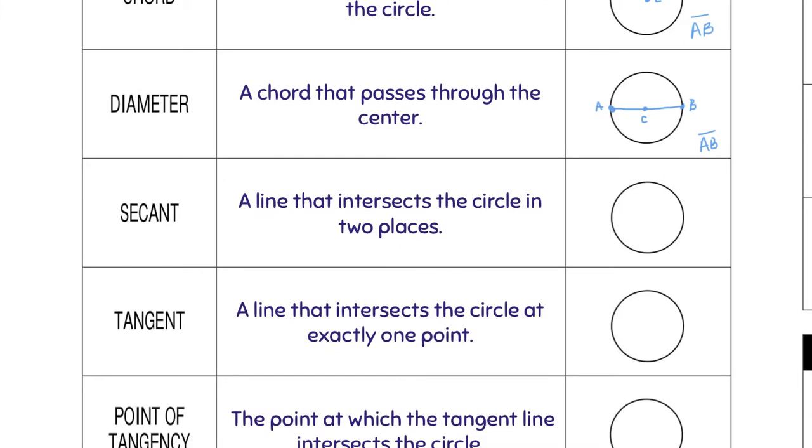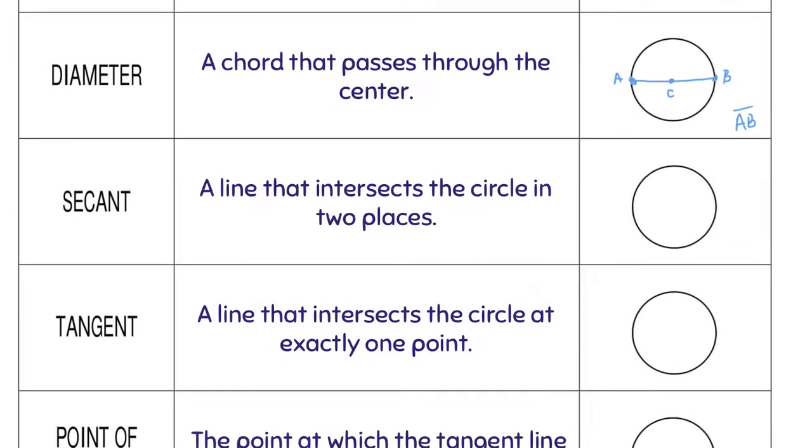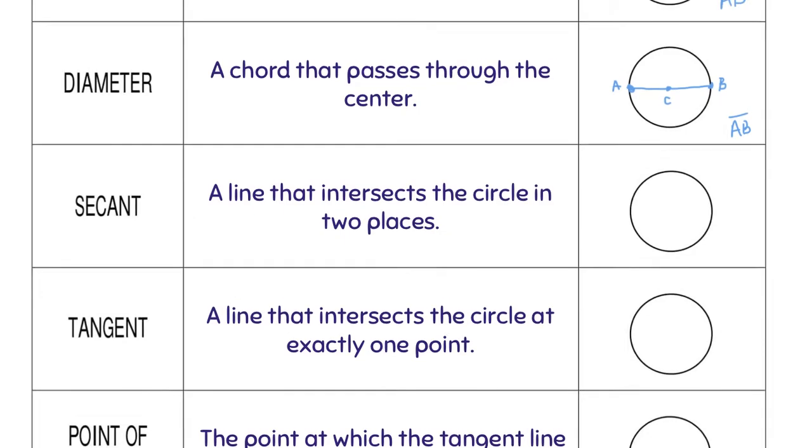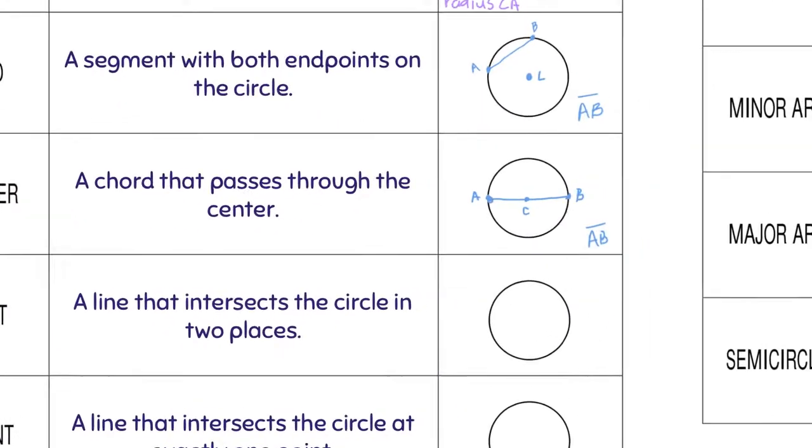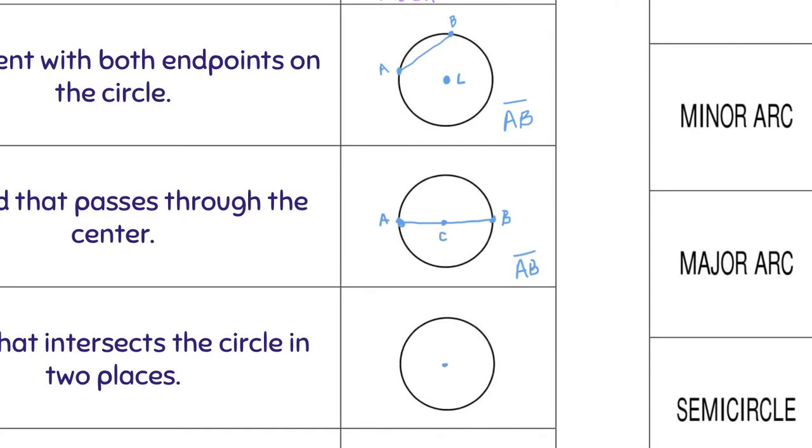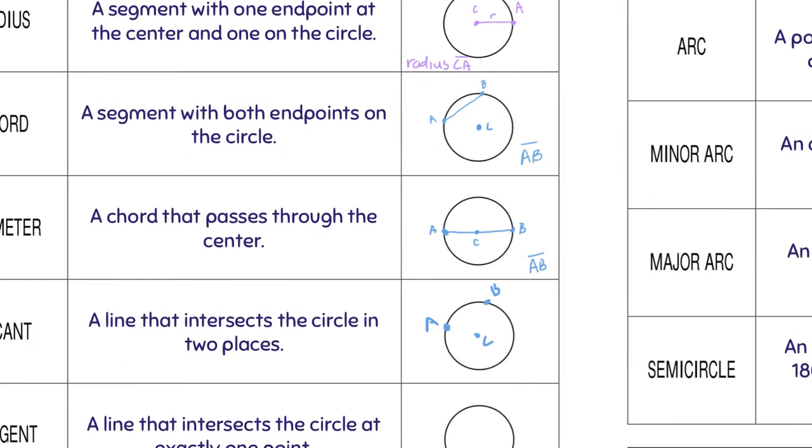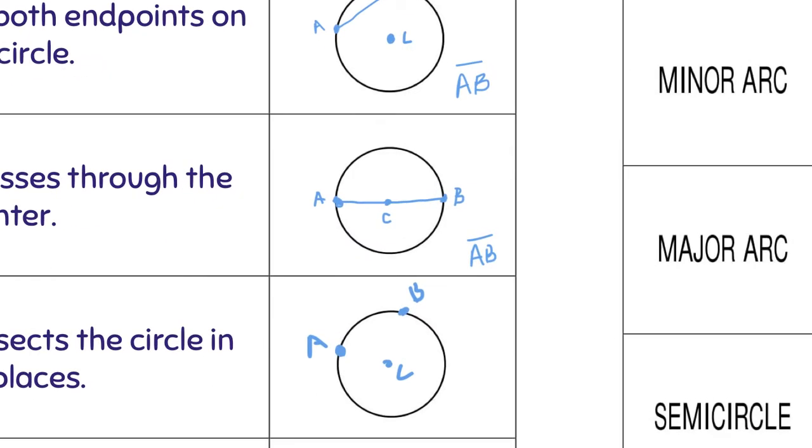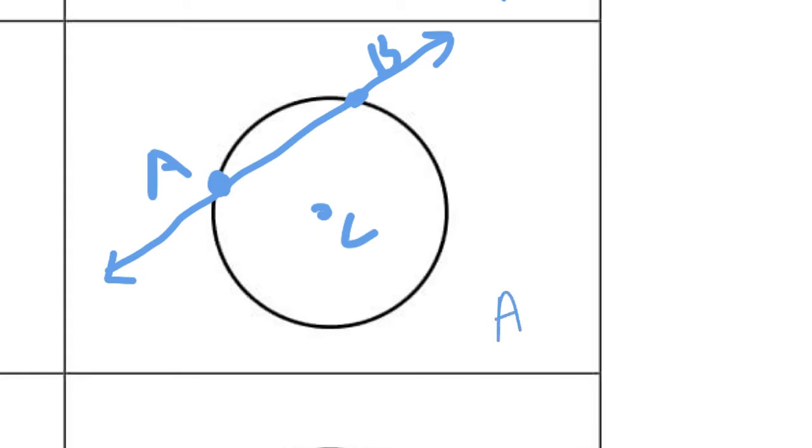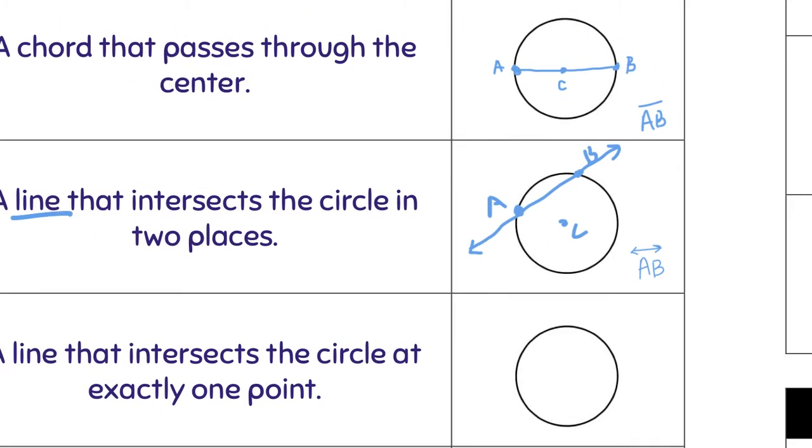The next vocabulary is a secant. A line that intersects the circle in two places. So don't get this confused with a chord. It almost looks the same. So here's my center. And then if I were to have two points on the circle, A, B, only this time it's a line, not a line segment. So that means that it's going to go through those two points, arrows on the ends. So that would be A, B, like that with arrows on the ends. Because it doesn't stop. It keeps going.